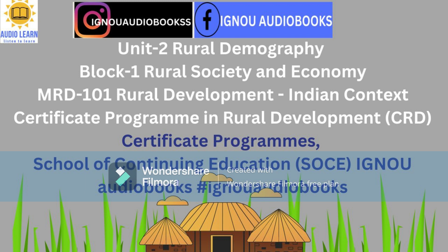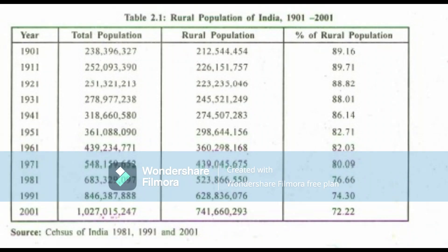2.4 Size, Growth and Distribution of Rural Population. 2.4.1 National Picture. According to the 2001 census, the total population of our country was 1,027,015,247, of which 741,660,293 or 72% was rural (see Table 2.1). Though the percentage of the rural population shows a moderate decline over the years, the absolute number shows a large rural base even during the last census. No development policy in India can succeed unless it centers around rural development. Table 2.1: Rural Population of India, 1901 to 2001.